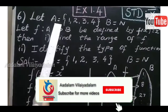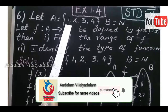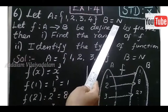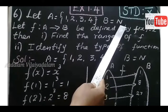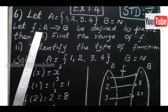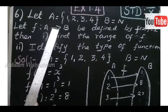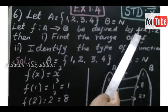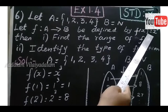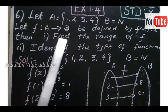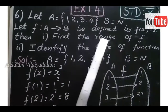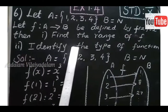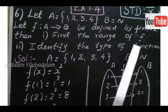Let A equal to {1, 2, 3, 4}, B equal to the set of natural numbers. F such that A tends to B is defined by F of X equal to X cube. Find the range of F, and second, identify the type of function.